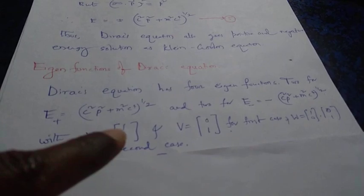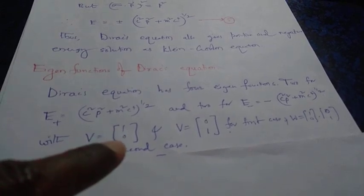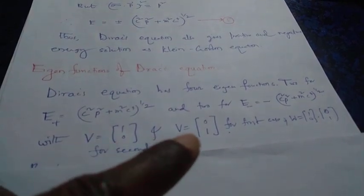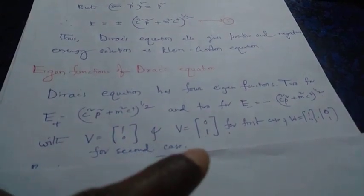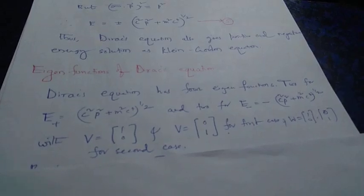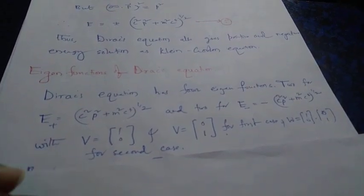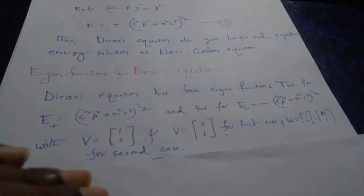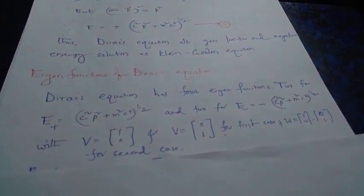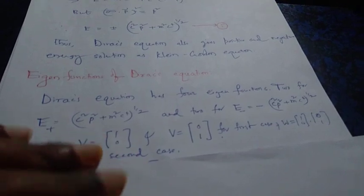For E+, we take V equals (1, 0) first and then V equals (0, 1), and solve for W in each case to get the two eigenfunctions for E+.